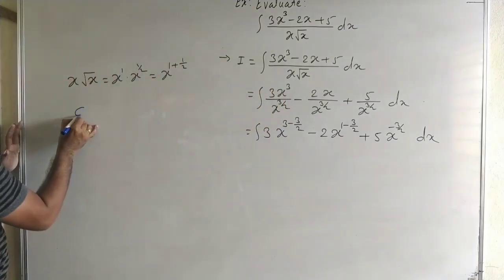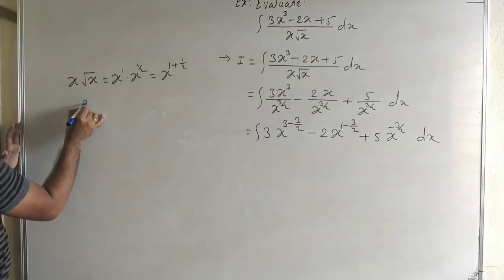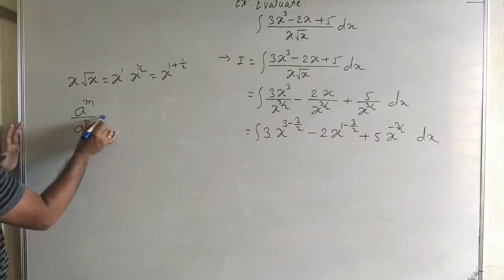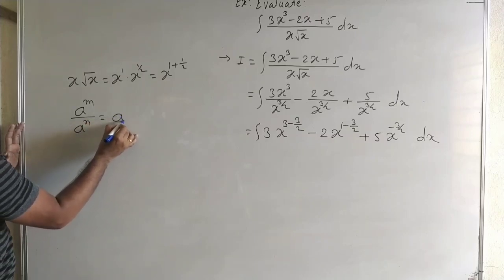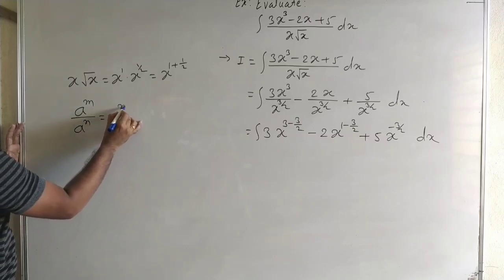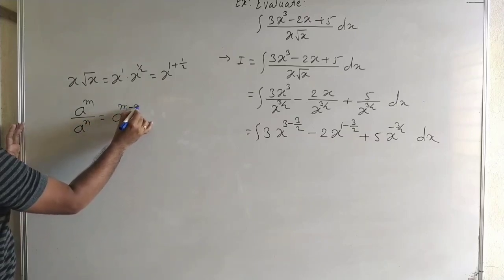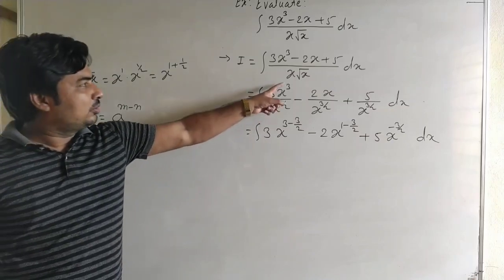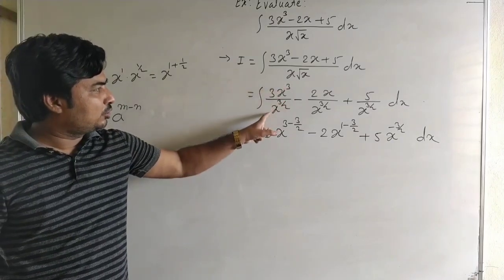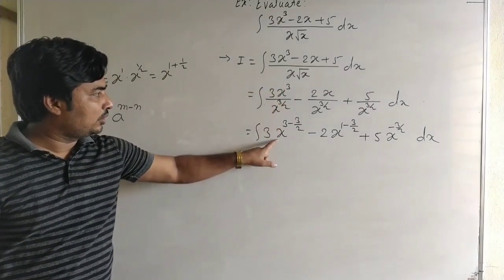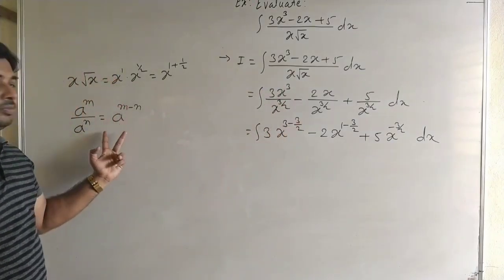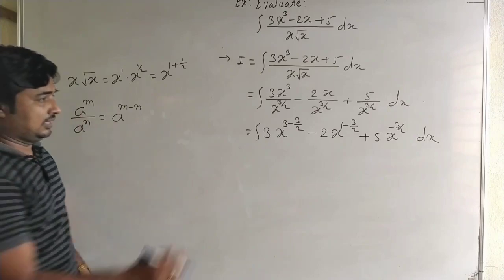We use the rules of indices: a to the power m upon a to the power n equals a to the power m minus n. So x to the power 3 upon x to the power 3 by 2 equals x to the power 3 minus 3 by 2.